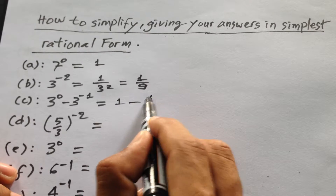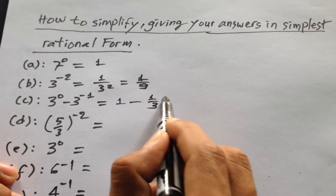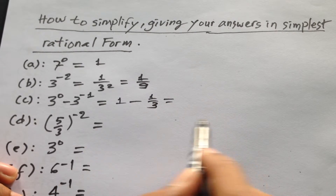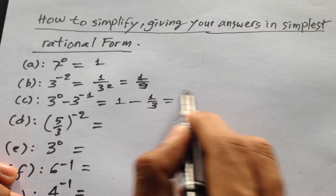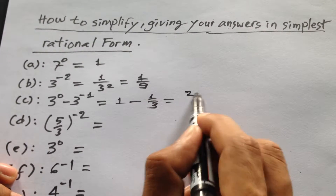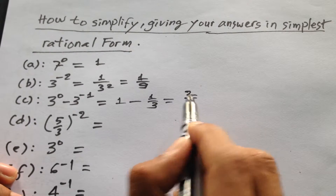It will be 1 minus 1 over 3, so we can simplify it to 2 divided by 3.